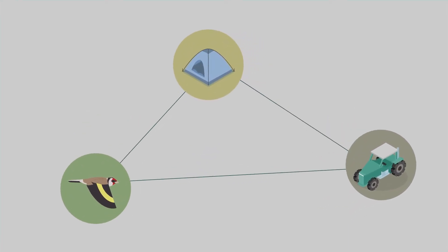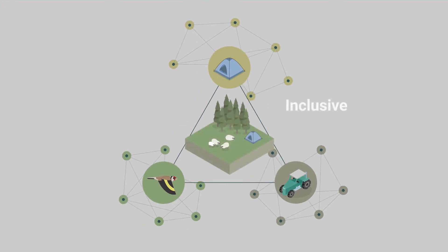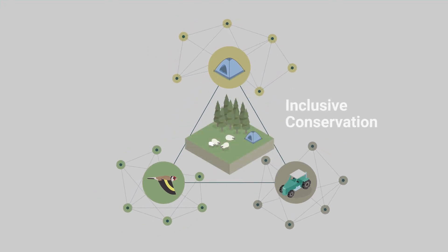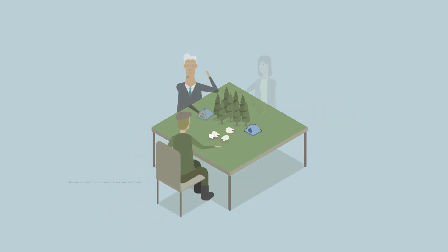Fortunately, new approaches to conservation are being considered to address these complexities. Inclusive conservation is an emerging framework that recognizes the variety of connections people make with natural areas and the landscapes in which they live, and opens up a dialogue across the various stakeholders of a protected area.